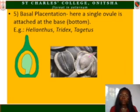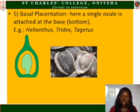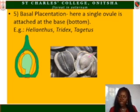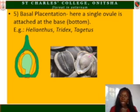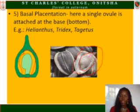The fifth type is basal placentation. In basal placentation, there is a single ovule or seed attached at the base or bottom of the fruit. You can see where the pointer is — the seed is attached to the bottom, and that point of attachment indicates basal placentation. The fruit covers the seed, and you can see the seed towards the base.